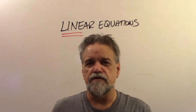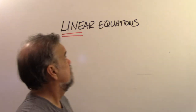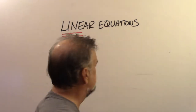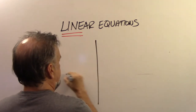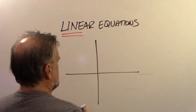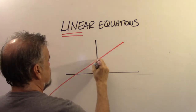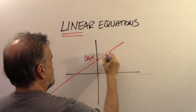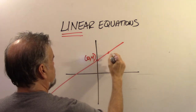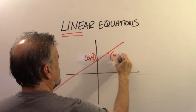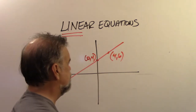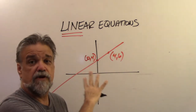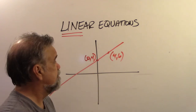What do linear equations look like when we graph them? They look like lines — that's why it's called linear. Let me draw a line. This line goes through the point (0, 4) and through the point (4, 6). So that's my linear equation.